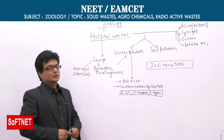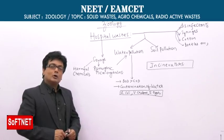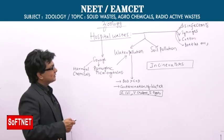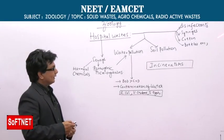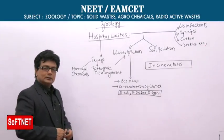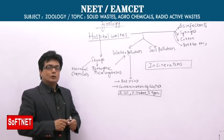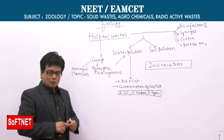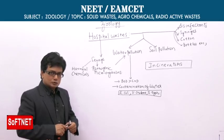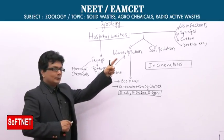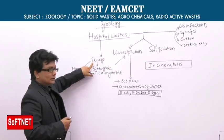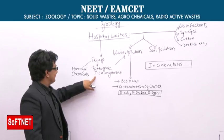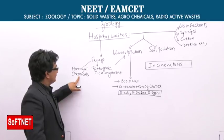After learning about solid waste, let us continue our journey by learning about hospital waste. What does hospital waste generally contain? Fundamentally, it will contain disinfectants, syringes, cotton, bottles, etc. Apart from that, the sewage from the hospital is also one of the principal sources of water pollution.